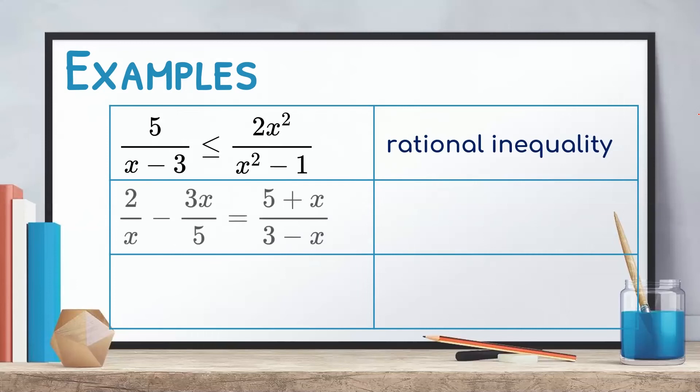Looking at the fifth one, 2 over x minus 3x over 5 equals 5 plus x over 3 minus x. Since there is an equal sign here, this is a rational equation.